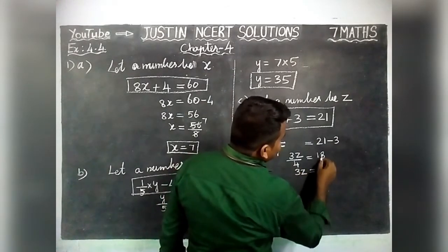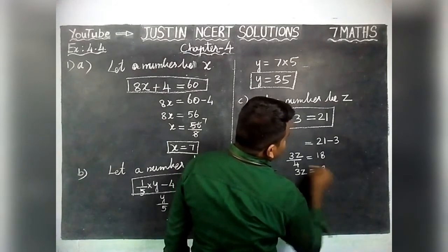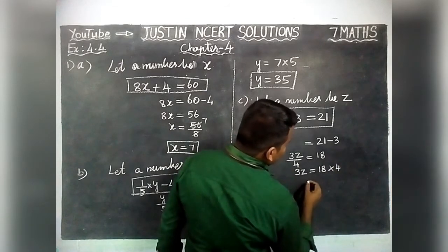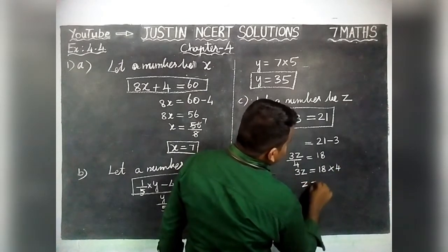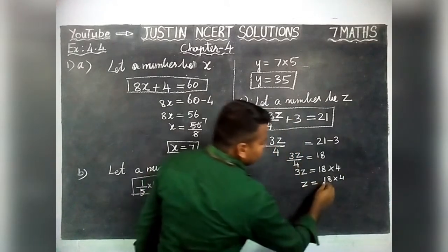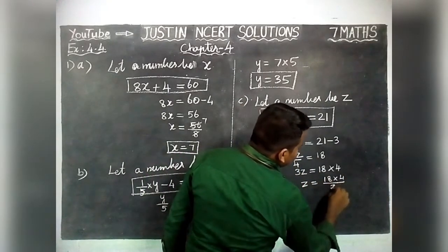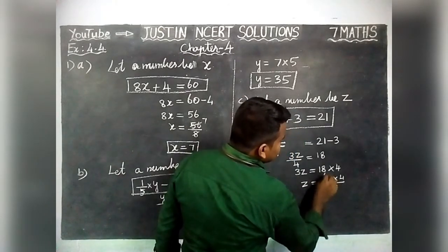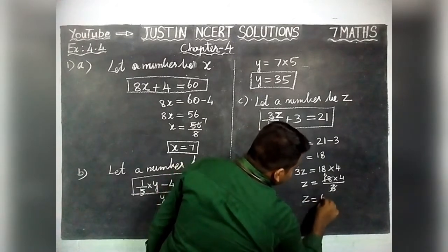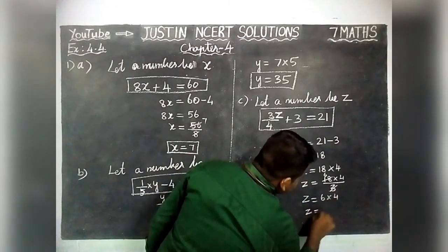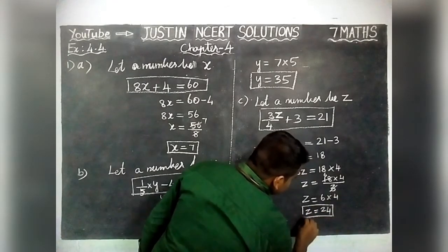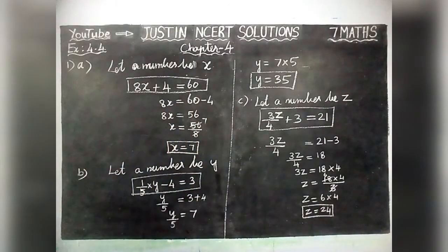So 3Z = 18. When division goes to the right hand side it becomes multiplication: 3Z = 18 into 4 = 72. Now taking 3 to the right hand side it becomes division: Z = 72 divided by 3. Since 3 times 24 is 72, Z is equal to 24.